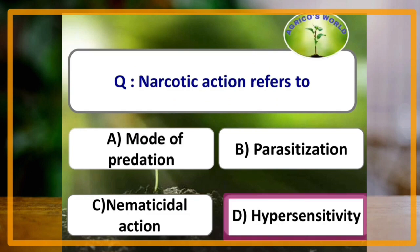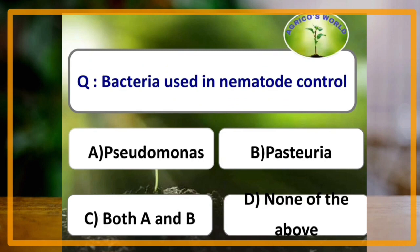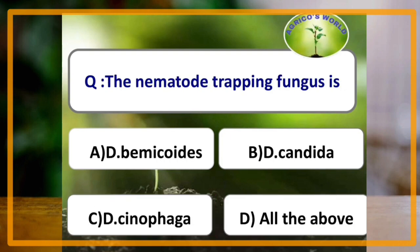Narcotic action refers to hypersensitivity. Most nematophagous fungi belong to the orders Moniliales and Zoopagales. Bacteria used in nematode control are Pseudomonas and Pasteuria. Nematode trapping fungi include Dactylella bembicoides, Dactylaria candida, and Dactylella sinophaga.